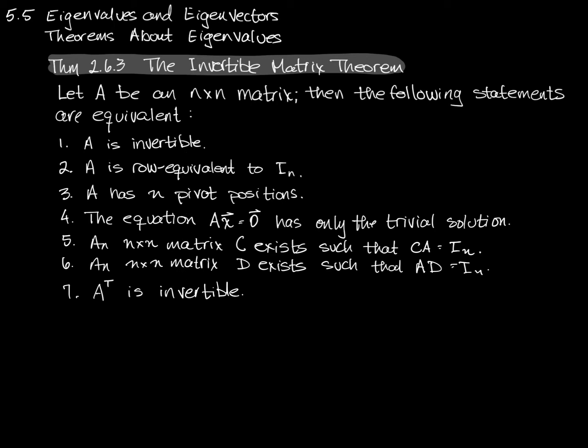If A is an n by n matrix and you know that the matrix A only has a trivial solution, then you also know that the transpose of A is invertible and that A is row equivalent to I sub n, and so on. It does not say that being an n by n matrix automatically means any of these things. That's an important distinction to make — there's no if statement here.